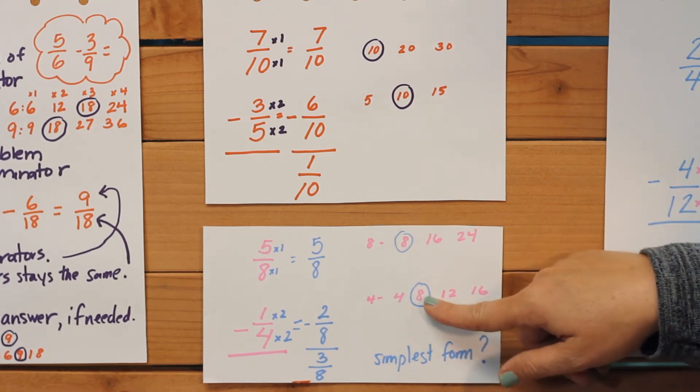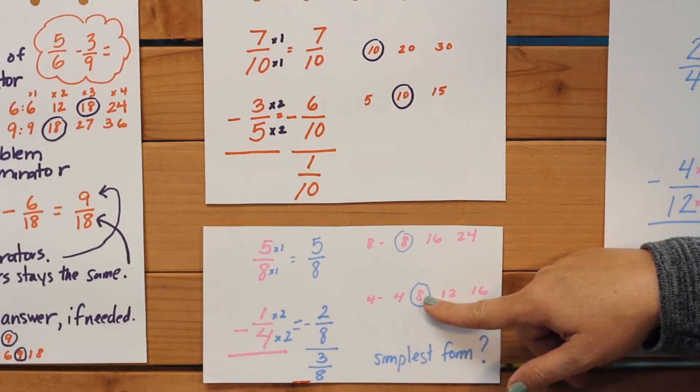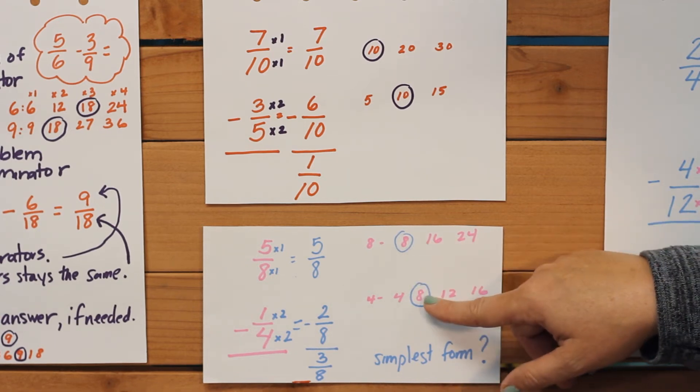Eights are the first thing that comes up that's common, so we need to change the denominators to eight.